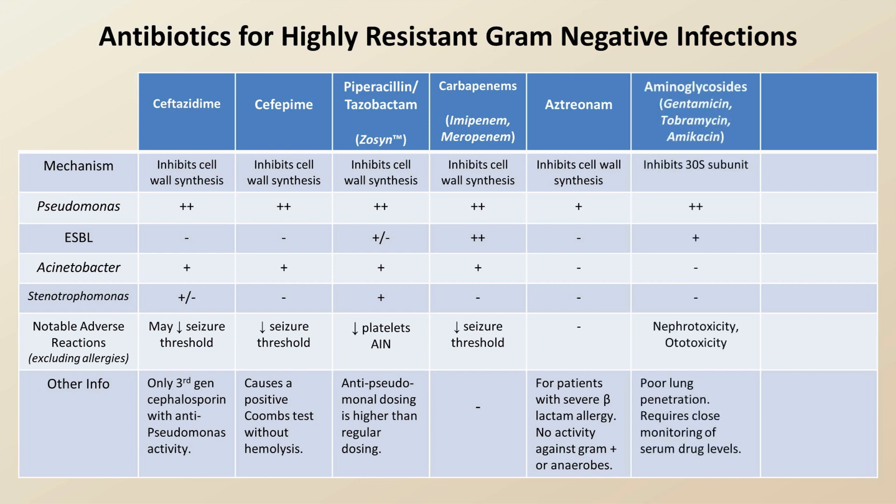The aminoglycosides, which inhibit the 30S ribosomal subunit, have great activity against Pseudomonas with some activity against ESBL. The aminoglycosides have significant adverse effects, most prominently nephro- and ototoxicity, which necessitates close monitoring of serum drug levels. The aminoglycosides also have poor lung penetration, though tobramycin specifically is available in an aerosolized form that is useful in treating Pseudomonas infections in patients with cystic fibrosis.